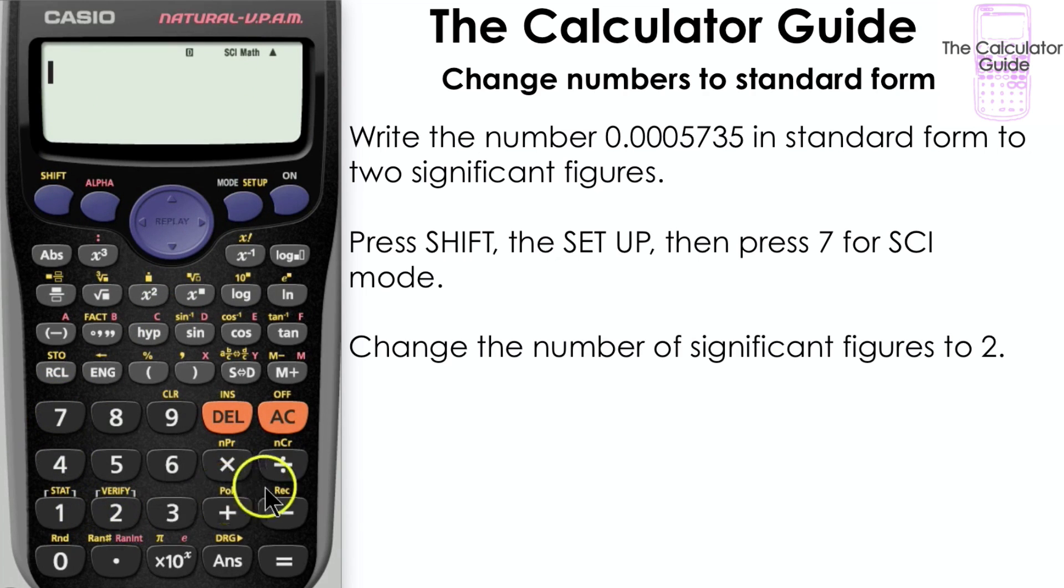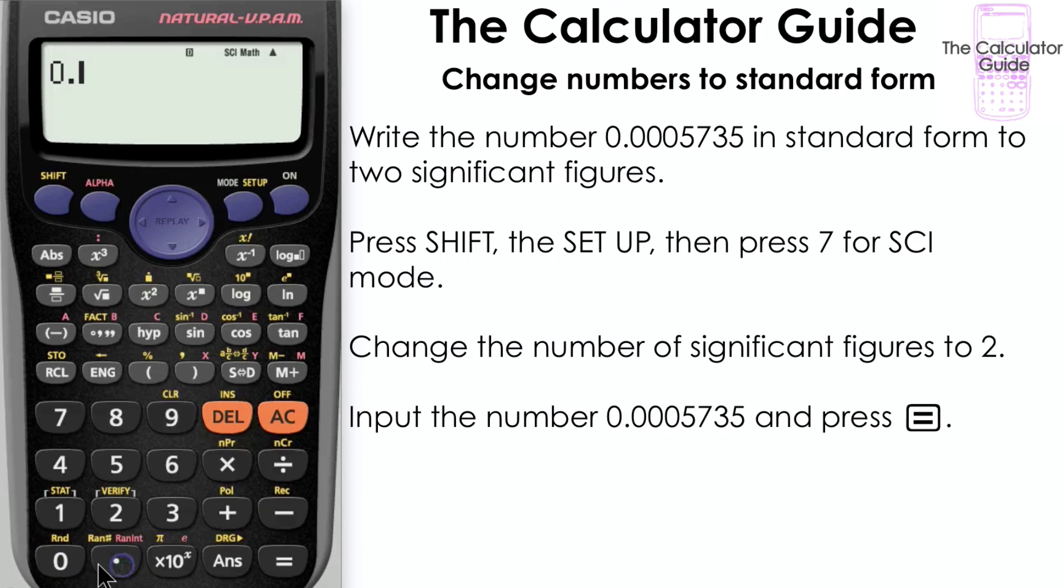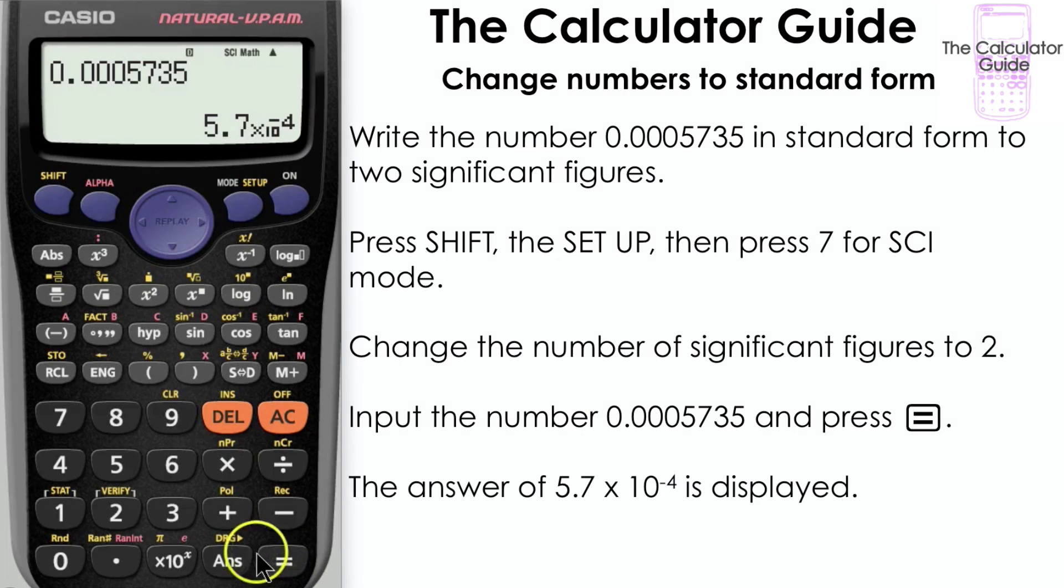Then we'll input the number 0.0005735 and press equals. And here we have our answer: 5.7 times 10 to the power of minus 4.